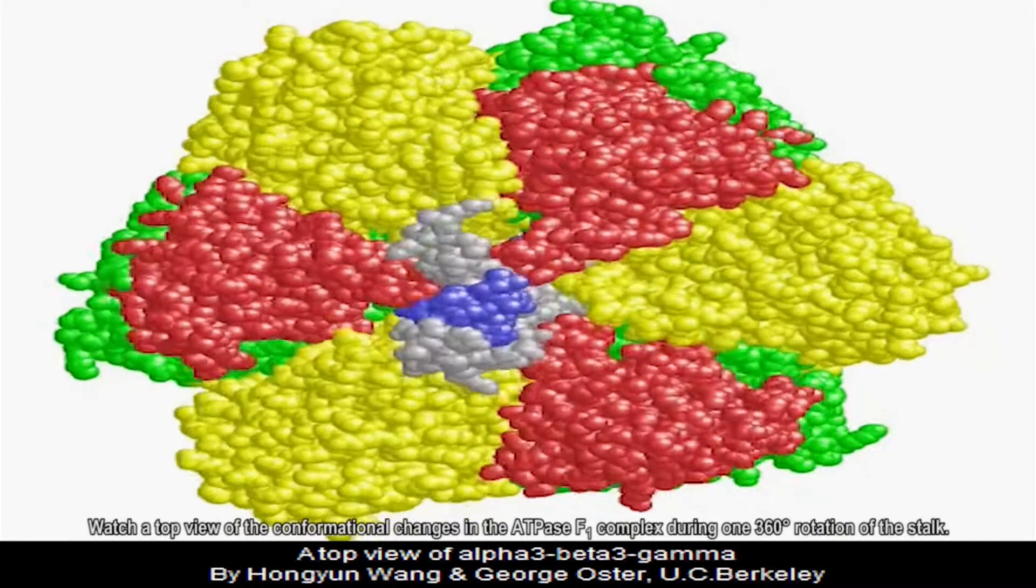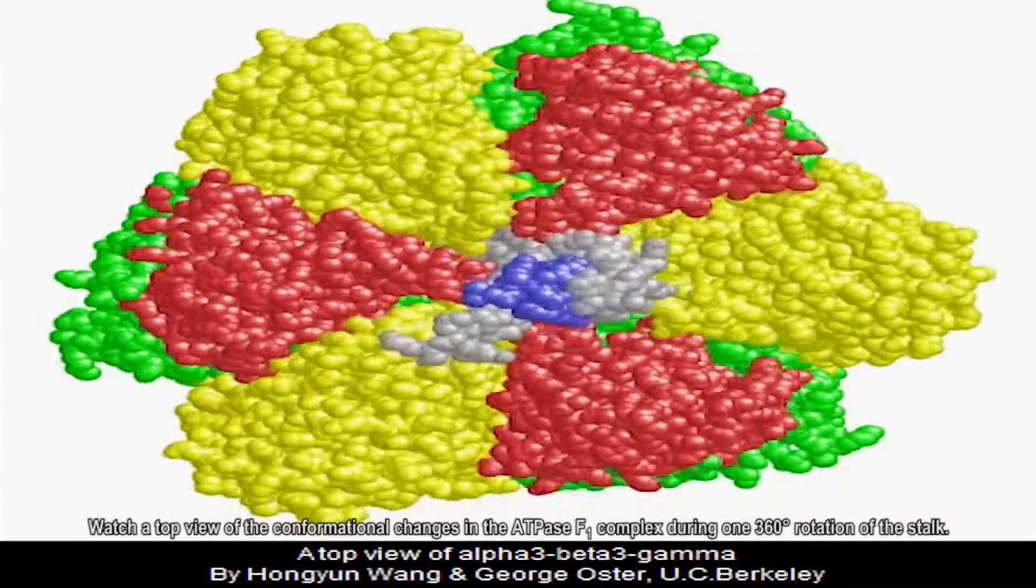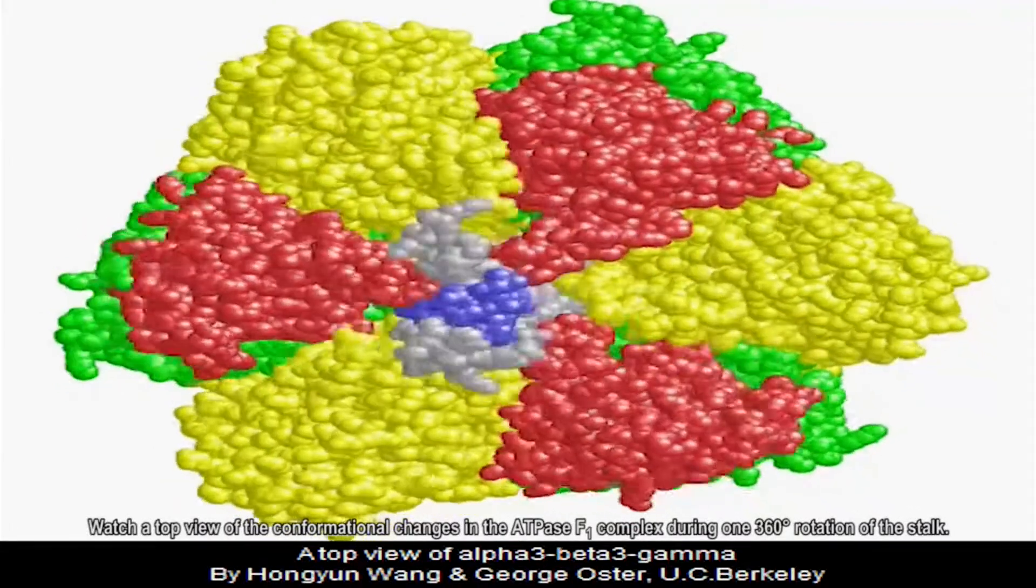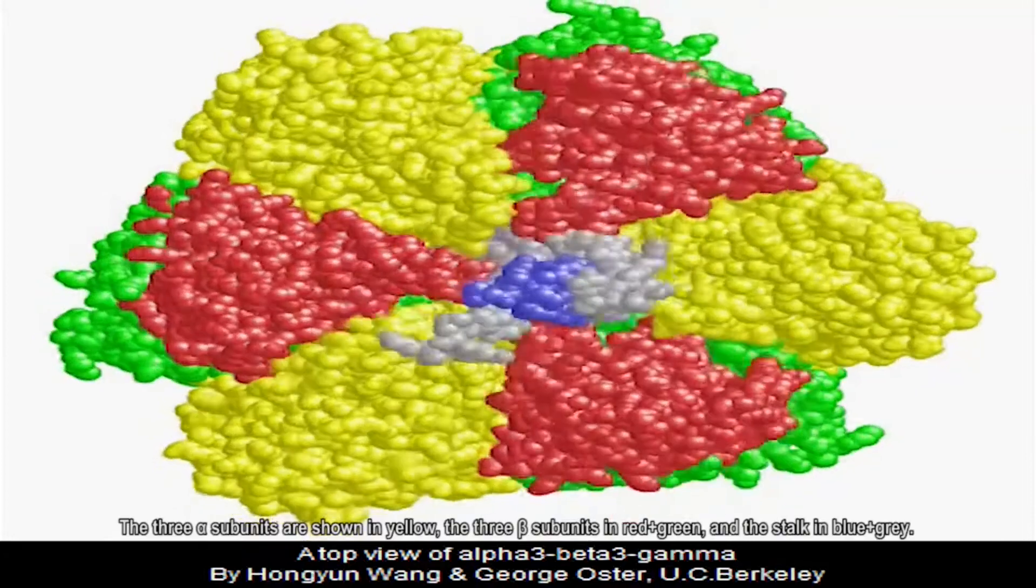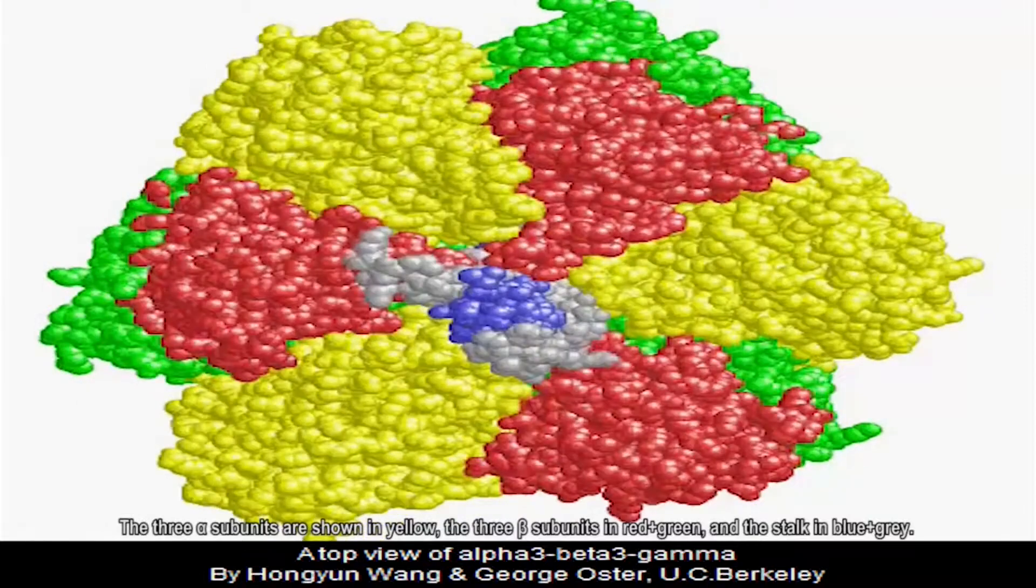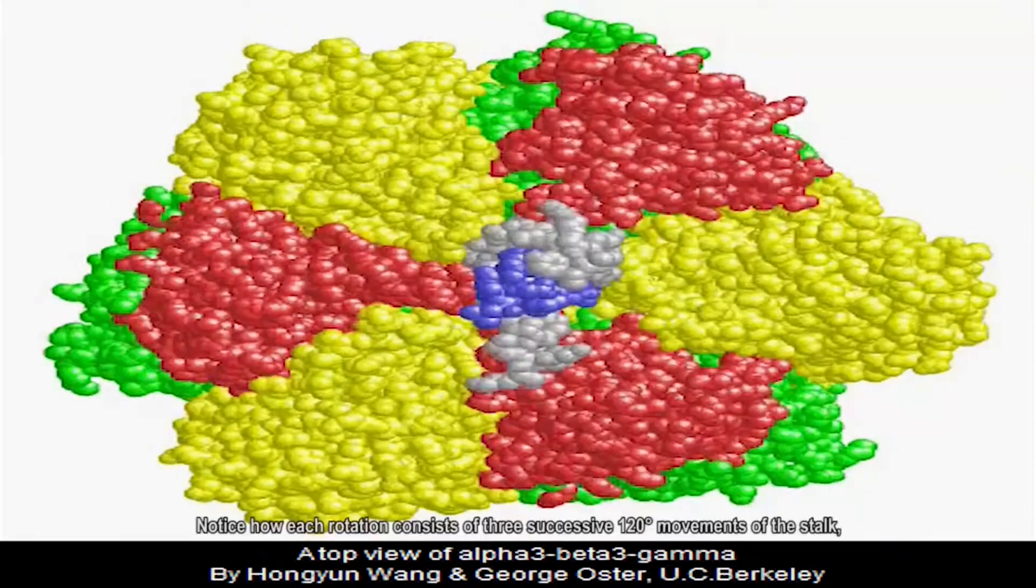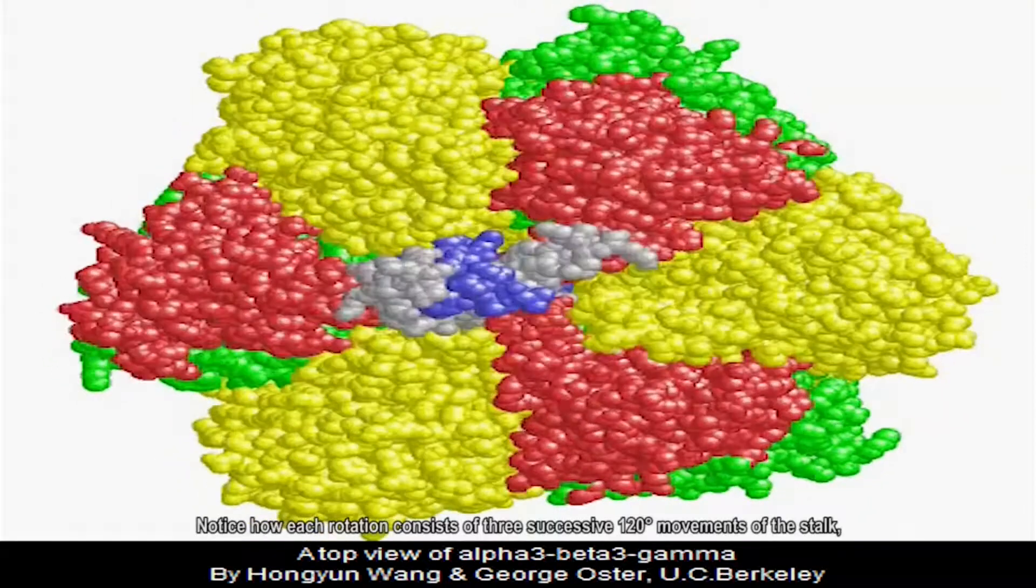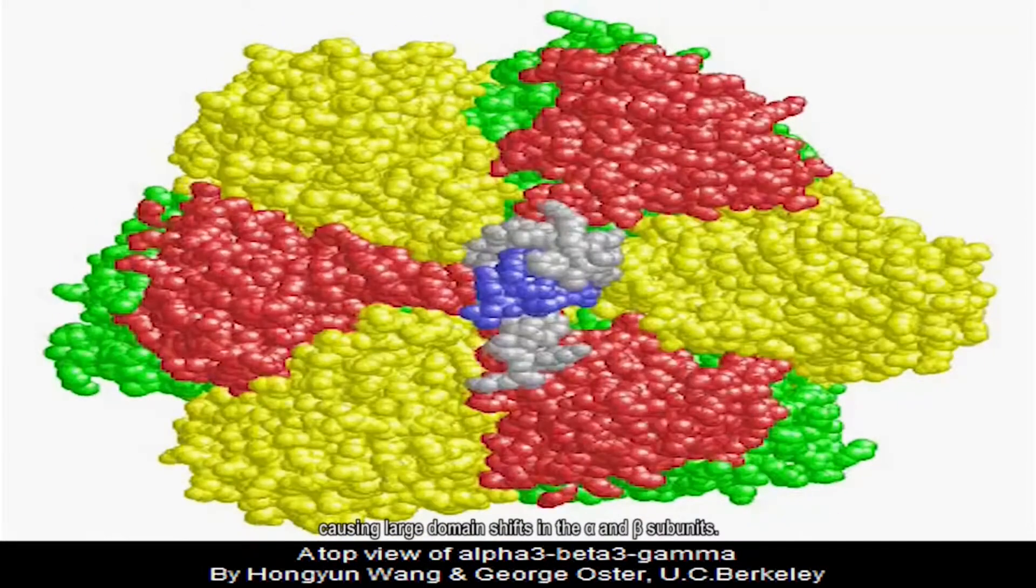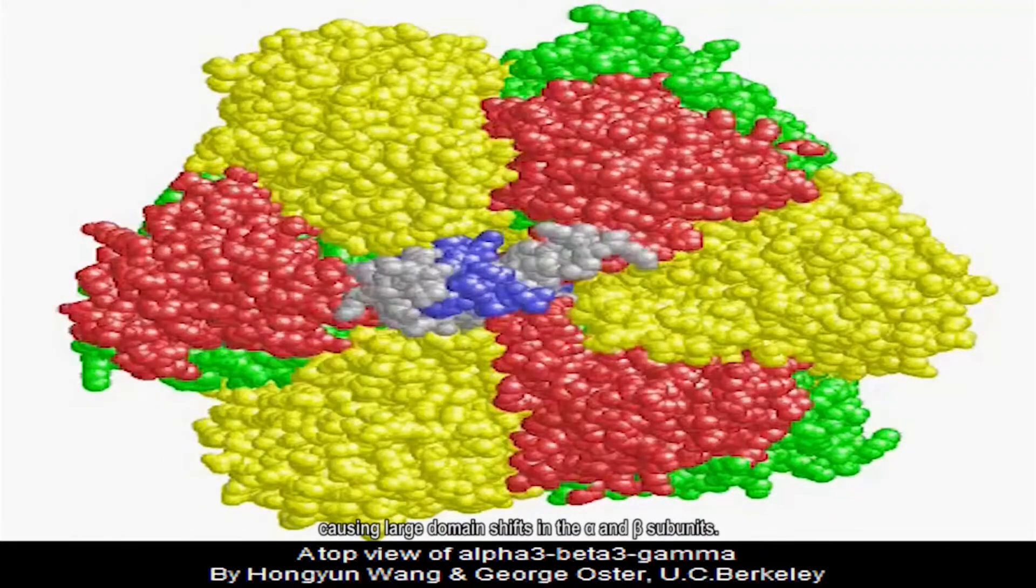Watch a top view of the conformational changes in the ATPase F1 complex during one 360-degree rotation of the stalk. The three alpha subunits are shown in yellow, the three beta subunits in red plus green, and the stalk in blue plus gray. Notice how each rotation consists of three successive 120-degree movements of the stalk causing large domain shifts in the alpha and beta subunits.